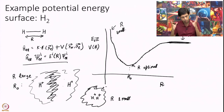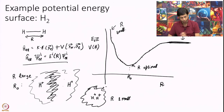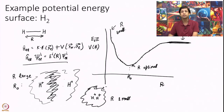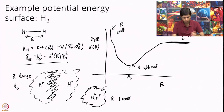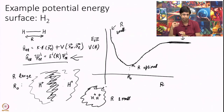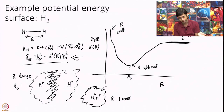This is just an example of how an energy surface looks for a specific molecule. You can choose any other molecule - methane, water, proteins, however large. The concept remains the same. For a given nuclear position, you solve the equation and calculate E_i. As the nuclei configuration changes, you recalculate E_i and that is your new energy.